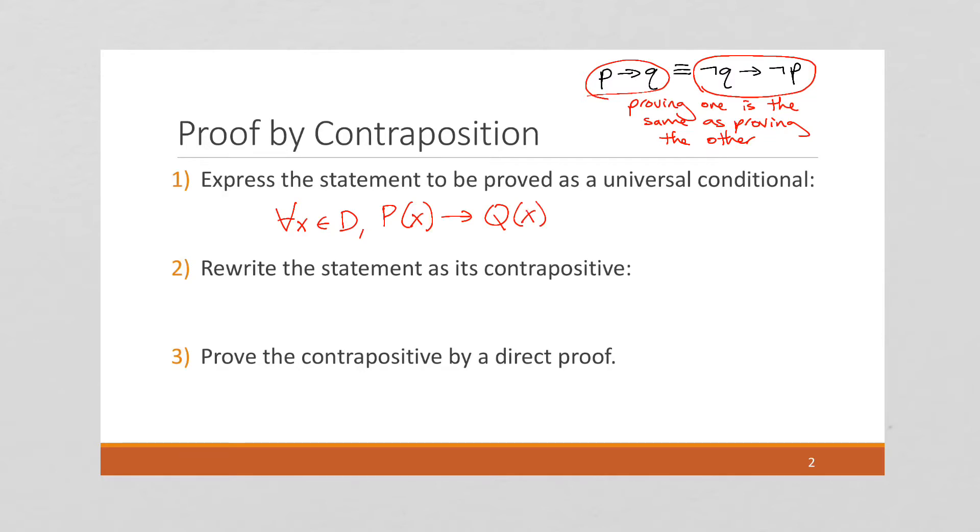We now want to rewrite the statement as its contrapositive, which again is equivalent. If you recall, the contrapositive is for all x in D, if x makes Q false, then x makes P false.